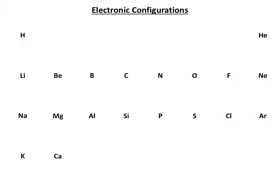Let's have a look at the electron arrangements of atoms. This diagram links the electronic arrangements to their position in the periodic table. Starting with hydrogen — it has an atomic number of one, which means it has one proton and consequently one electron, and that electron sits in the inner shell, the shell closest to the nucleus. Helium has an atomic number of two, which means it has two protons and consequently two electrons. That second electron also sits in the inner shell, and that shell is now full.